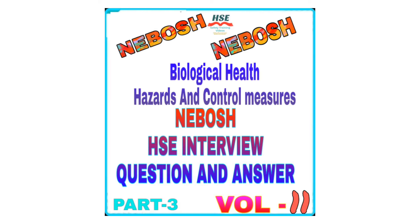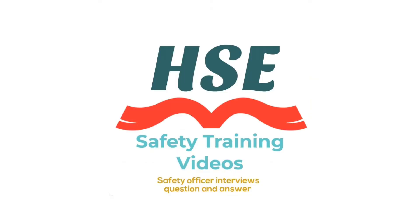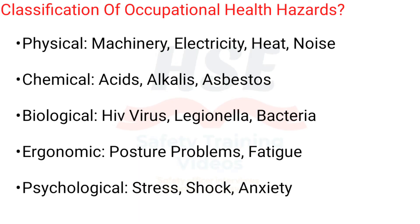Biological Health Hazards and Control Measures. Classification of Occupational Health Hazards: Physical.